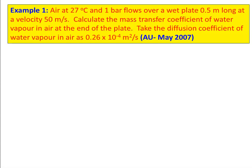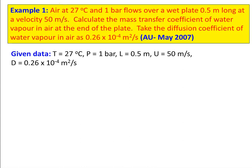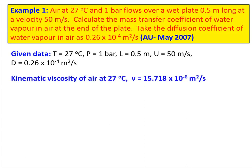Take the diffusion coefficient of water vapor in air as 0.26 × 10⁻⁴ meter square per second. Given data: temperature = 27°C, pressure = 1 bar, length = 0.5 m, velocity = 50 m/s, diffusion coefficient D = 0.26 × 10⁻⁴ m²/s. The kinematic viscosity of air from the data book at 27°C: ν = 15.718 × 10⁻⁶ m²/s.